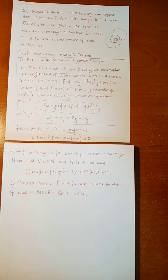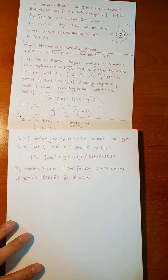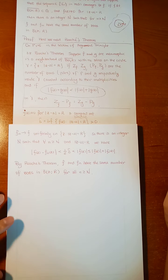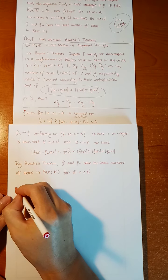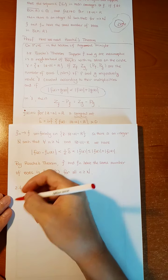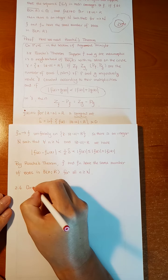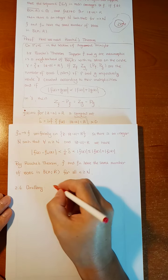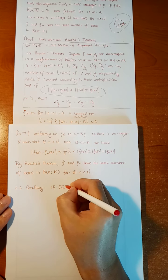So that's Hurwitz's theorem. An easy corollary from Hurwitz's theorem is the following. Corollary 2.6: sometimes we want to know if the limit function has a zero or not.